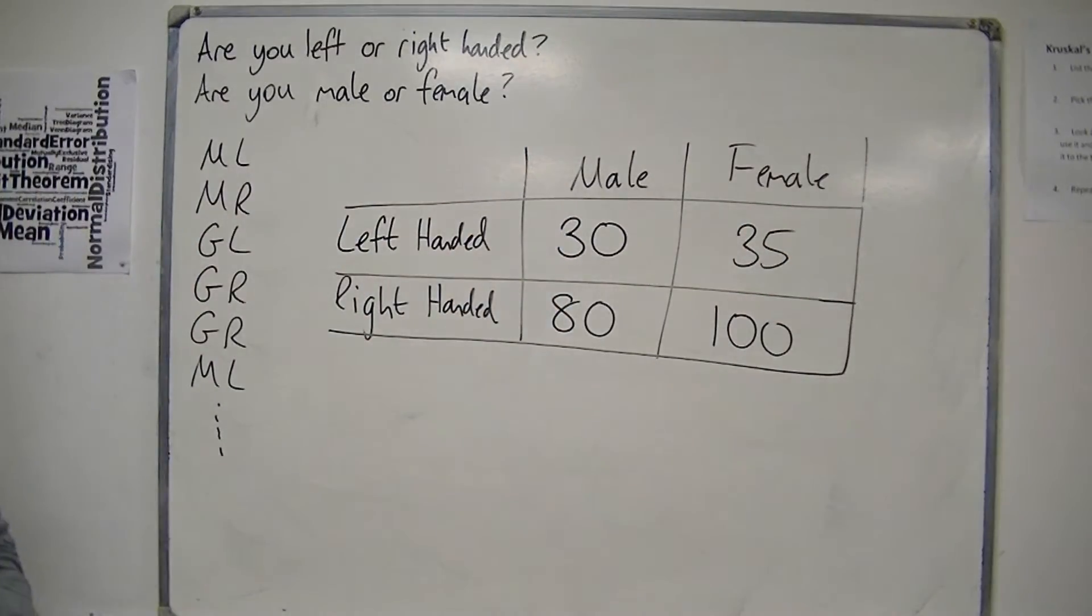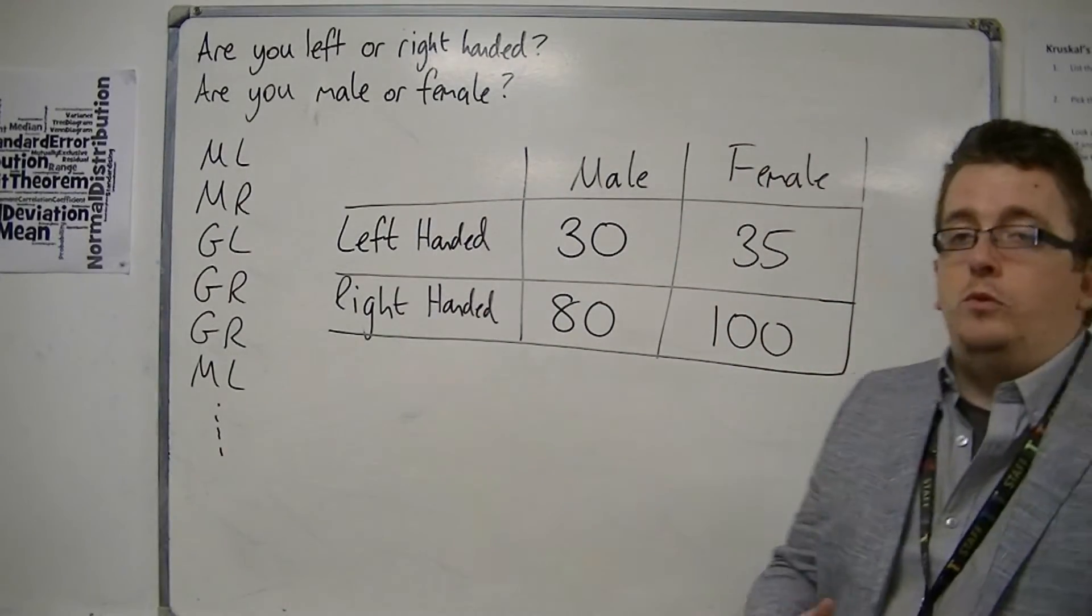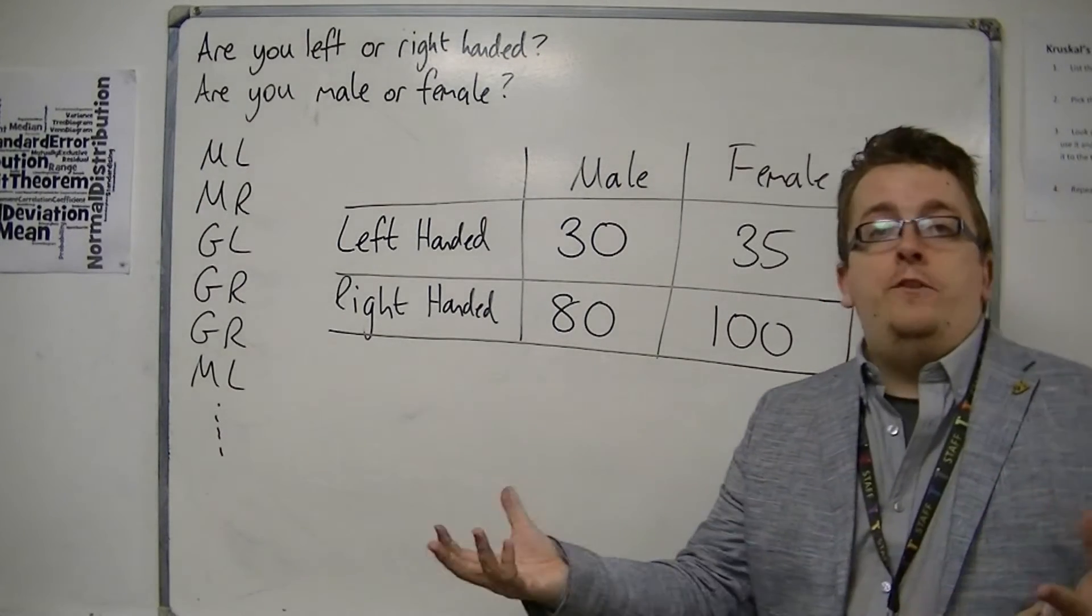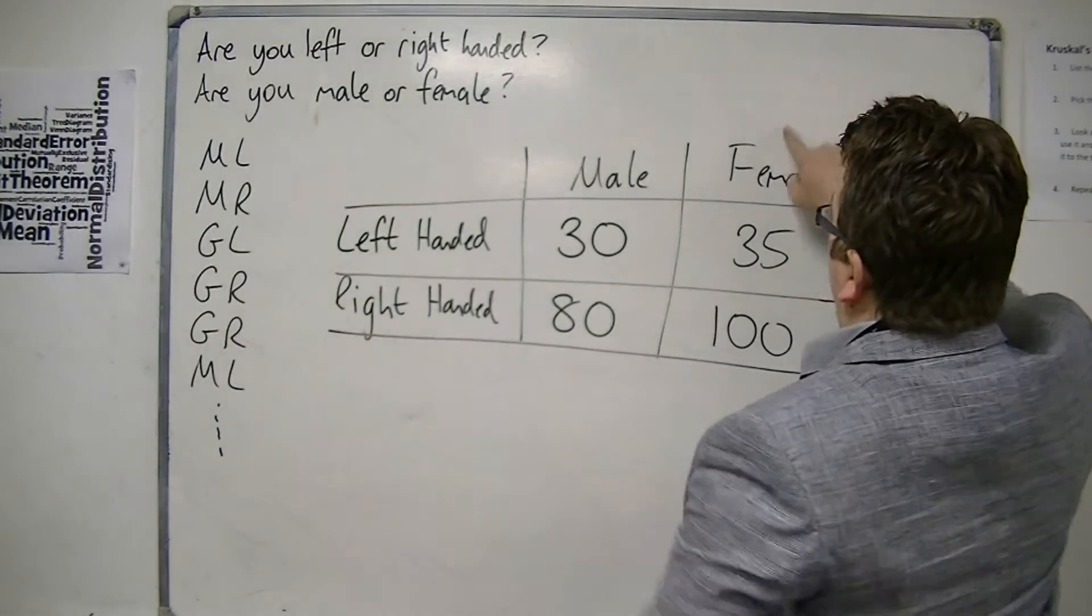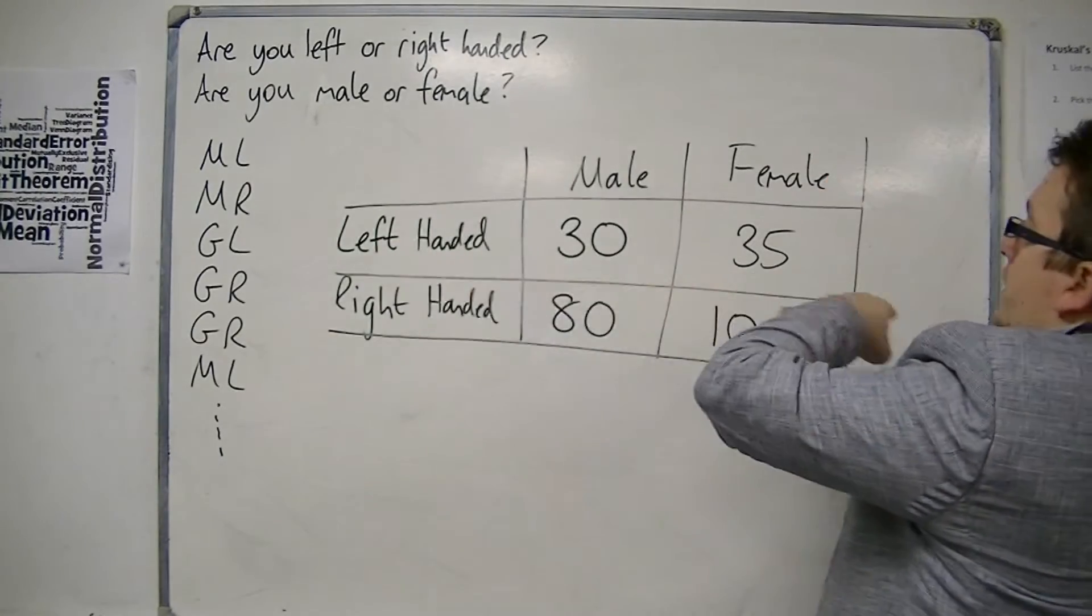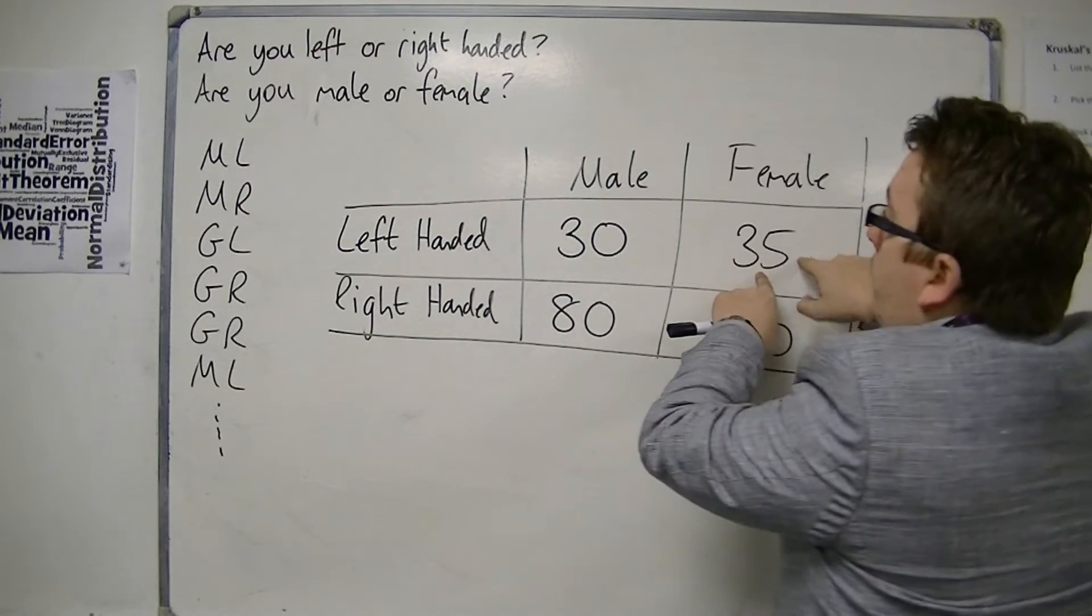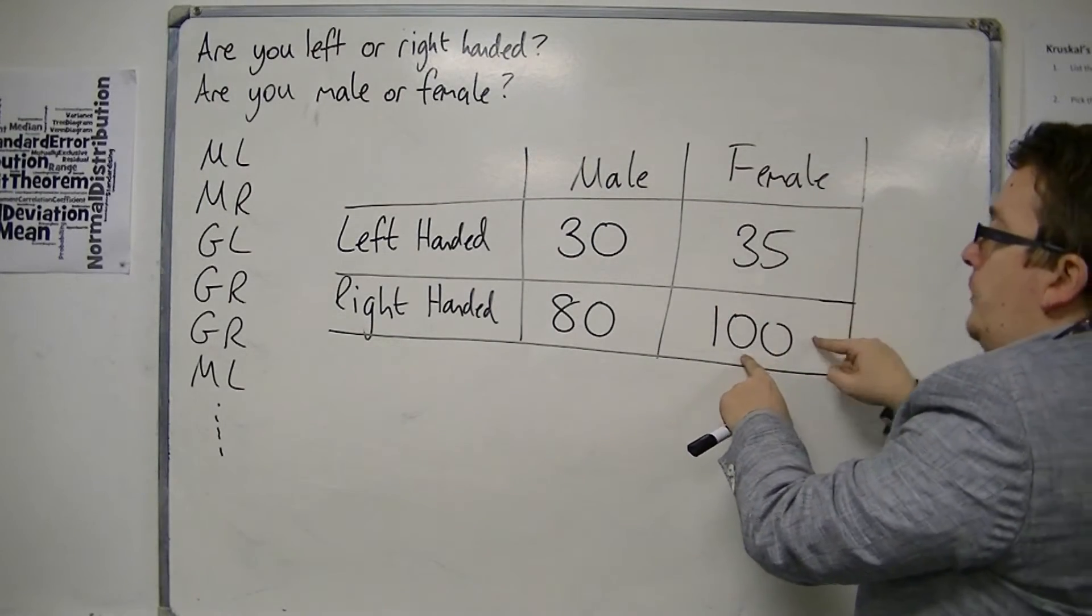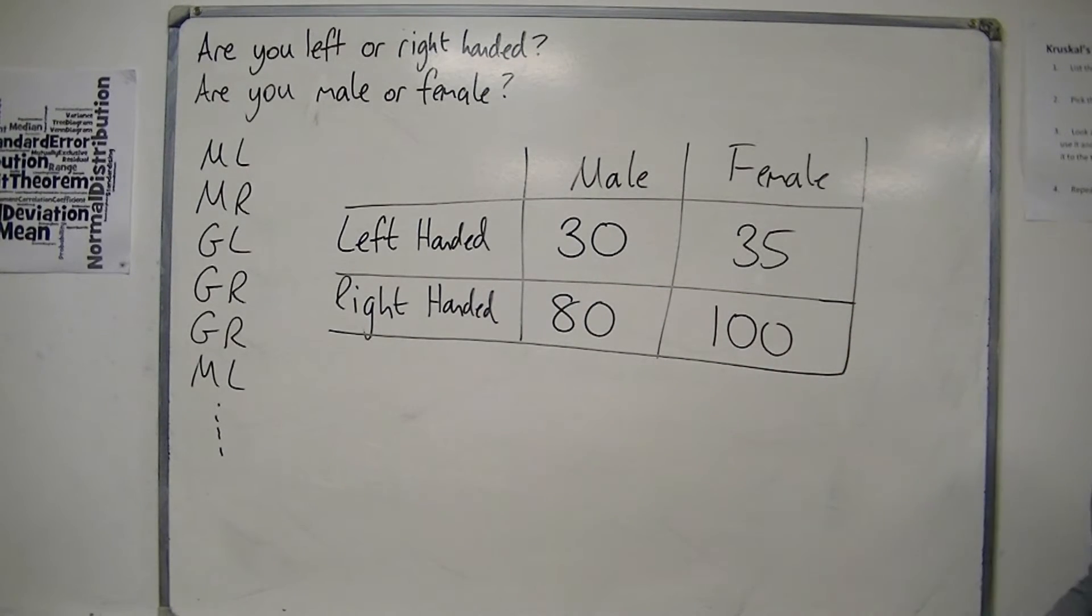So this is the data that I have. And you need to be able to read from this two-way table and identify how many females were left handed. So what I do is I look down the female column, and I look along the left handed row, and it's where they cross. So 35 females were left handed. 100 females were right handed. And so on. So it's relatively easy to read from. But questions can then come from it.